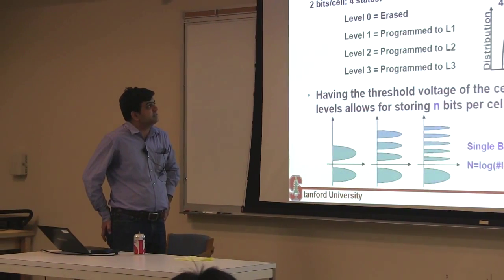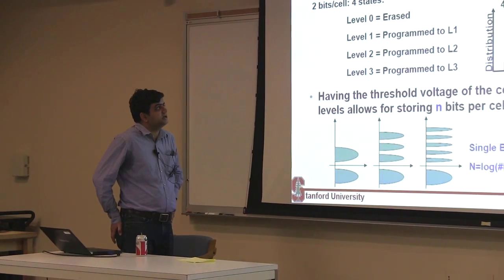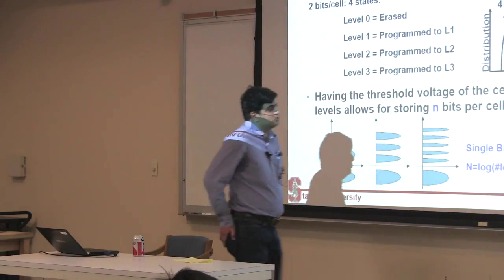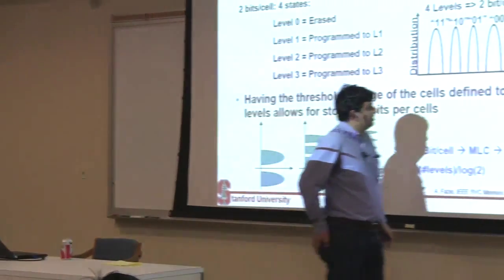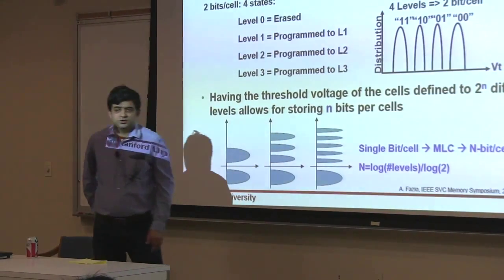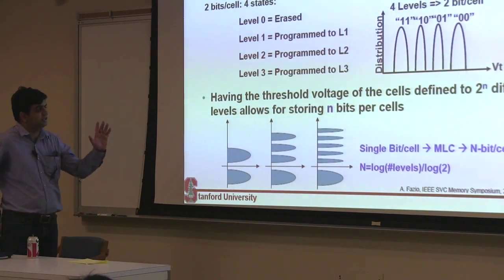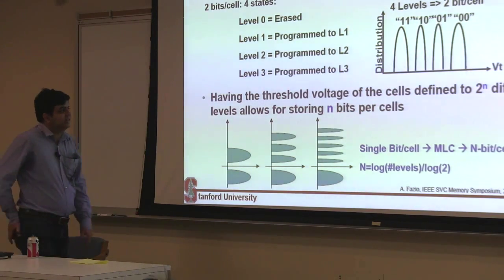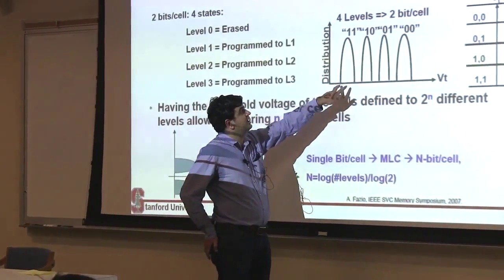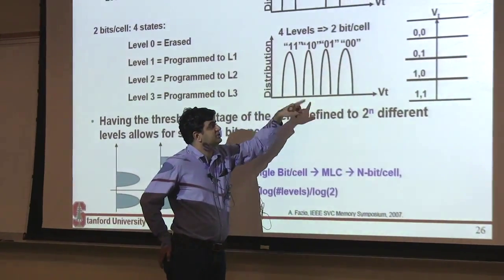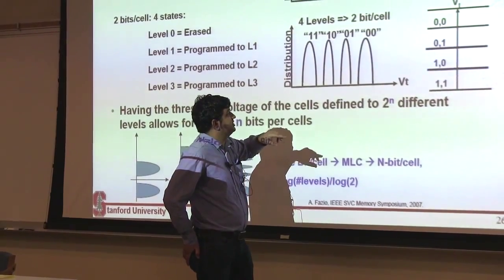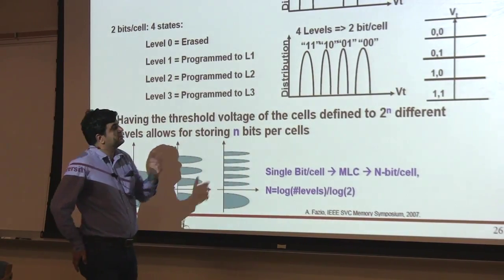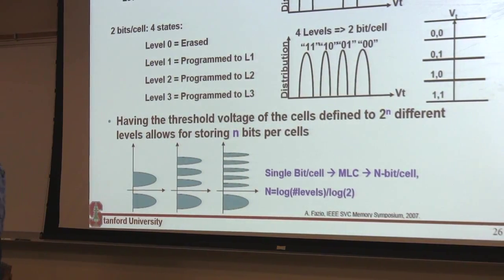There are cells available in the market which are three level per cell, also called as TLC. So for TLC, you'll need two to the power three or eight levels. And believe it or not, there are cells available which store four bits per cell as well. So for four bits in one cell, you'll need 16 of these levels. And these levels have to be separated. This is not just one level. It's a distribution. So these distributions need to be well separated from each other. They don't need to close when you cycle the cell. But still it's doable and people do it.